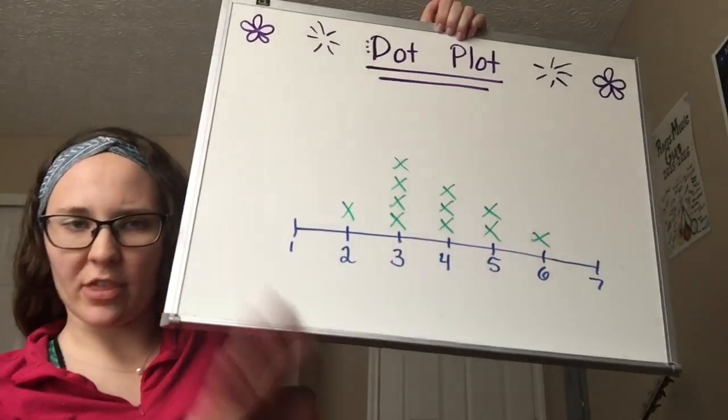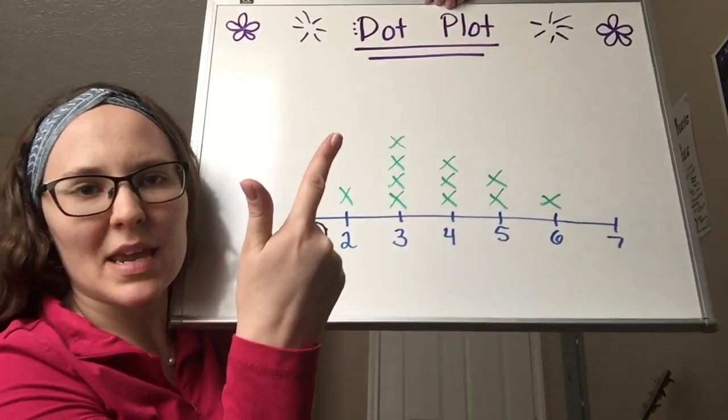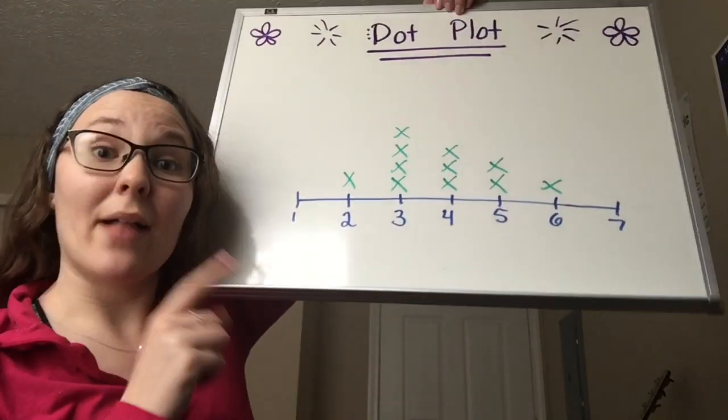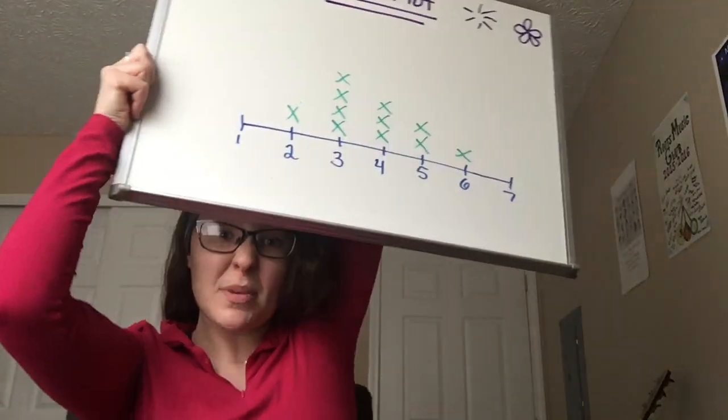On a dot plot, we can calculate everything. We can calculate the mean, the median, the mode, and the range, as well as minimum, maximum, as well as shape of the data, peak of the data. Everything. You can calculate everything from a dot plot.